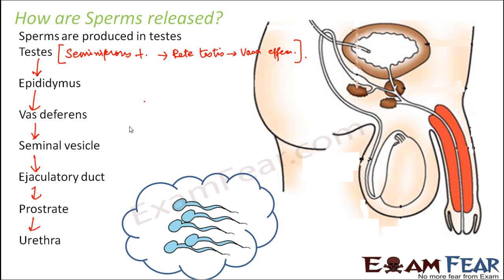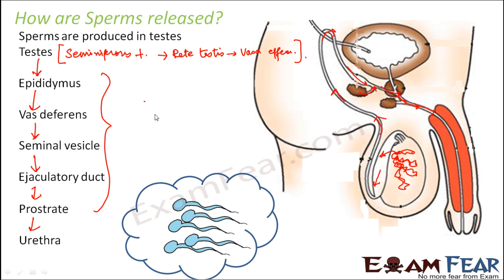So basically what is the fluid being formed here? Inside the testis you have the seminiferous tubules. From there it enters the rete testis and vasa efferentia, then into the epididymis, then the vas deferens. Along the way, secretions from the seminal vesicle and prostate gland join in. It reaches the ejaculatory duct and then the urethra. The fluid which comes out is not only sperms — it contains sperms, the secretion of the seminal vesicle, the prostate gland, and the Cowper's gland. This fluid is known as semen.